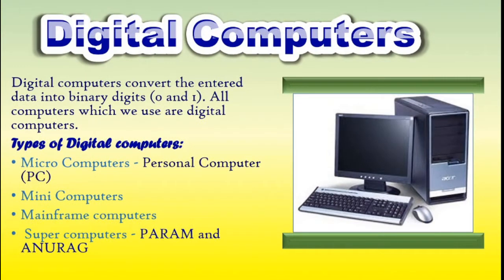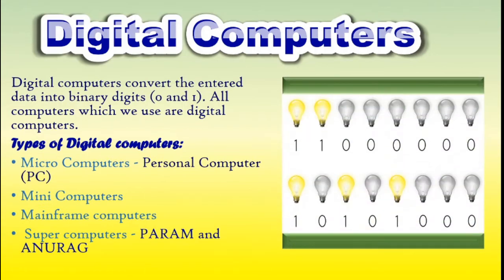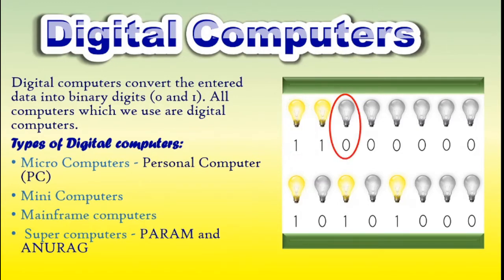A digital computer works with digits to represent numerals, letters, or other special symbols. Digital computers operate on inputs which are on-off type and its output is also in the form of an on-off signal. Normally, an on is represented by a 1 and an off is represented by a 0. So we can say that digital computers process information which is based on the presence or the absence of an electrical charge.